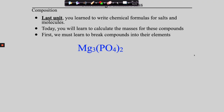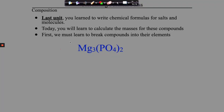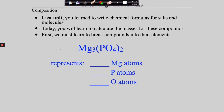For example, if we have the salt magnesium phosphate — we know it's a salt because magnesium, element number 12, is a metal — we need to know what elements it is made of. We know that there are magnesium atoms in magnesium phosphate. But phosphate is not an element; it's a polyatomic ion composed of phosphorus and oxygen. So magnesium phosphate is actually composed of magnesium atoms, phosphorus atoms, and oxygen atoms.